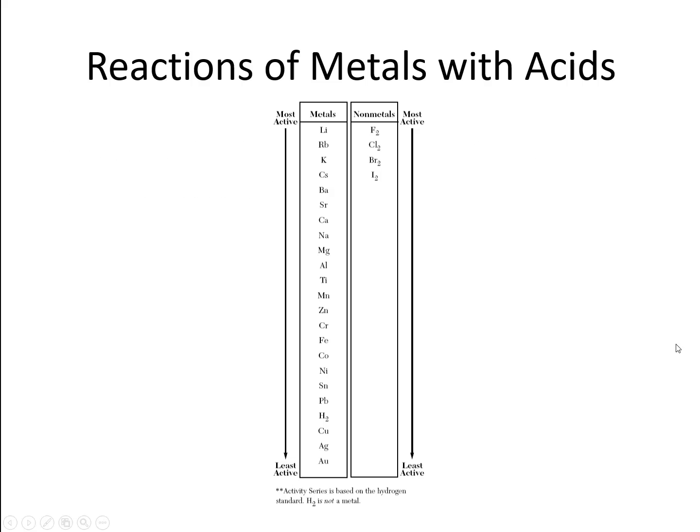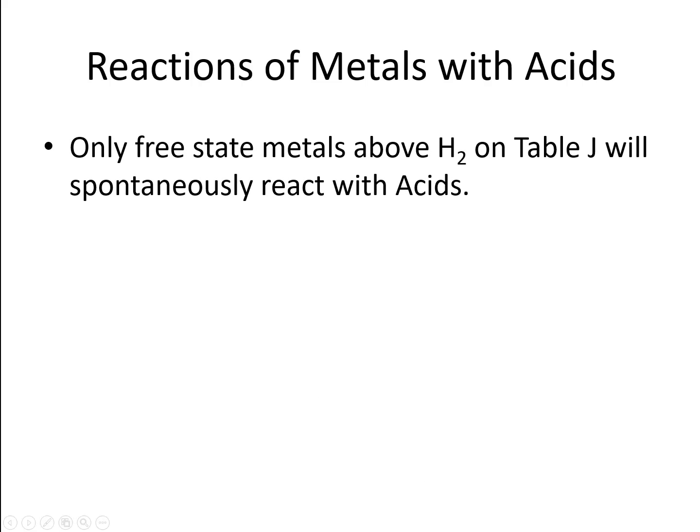First thing I want you to remember is that only free state metals above H2 on Table J will spontaneously react with acids. And that word spontaneously is pretty important to us here. It means we don't have to do anything extreme to start the reaction. If you're looking at Table J, any metal that is above hydrogen on Table J will react with acids. So that basically means that copper, silver, and gold will not react with acids.